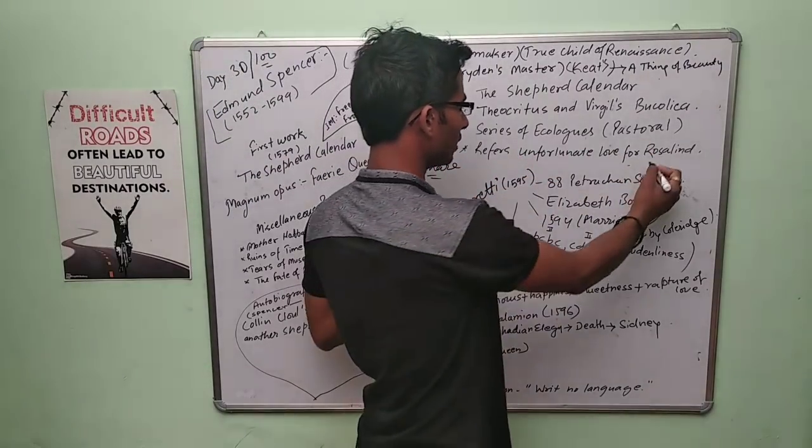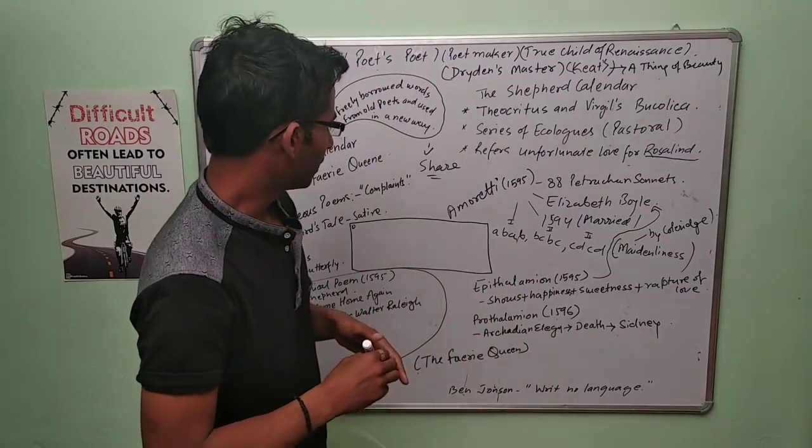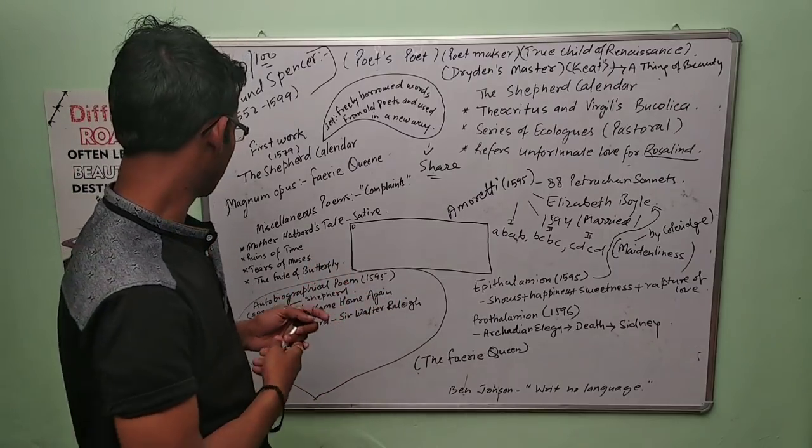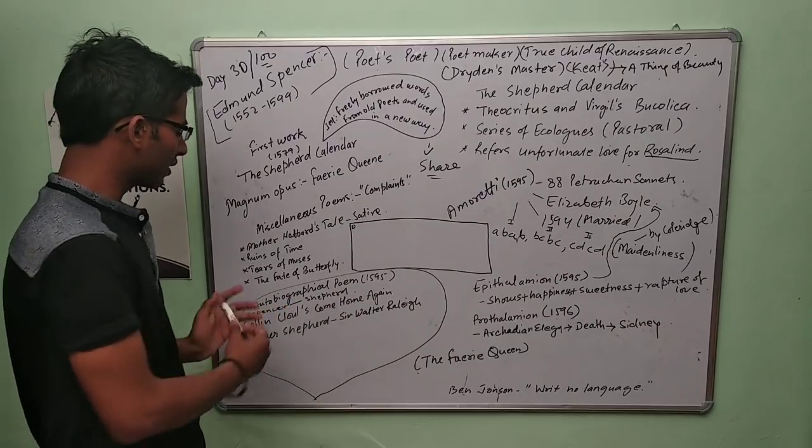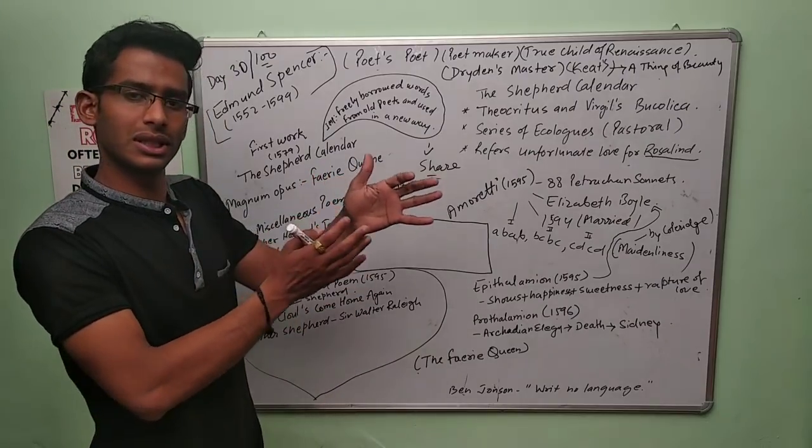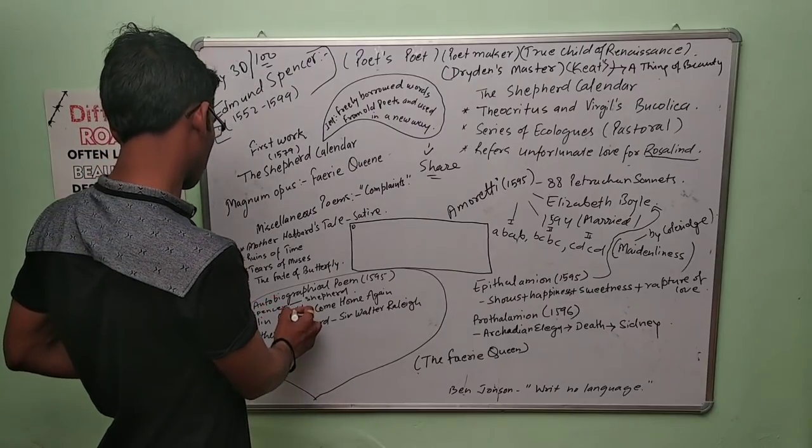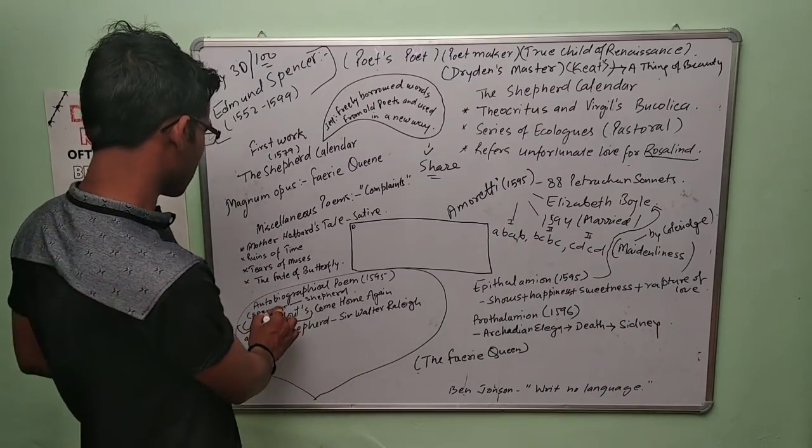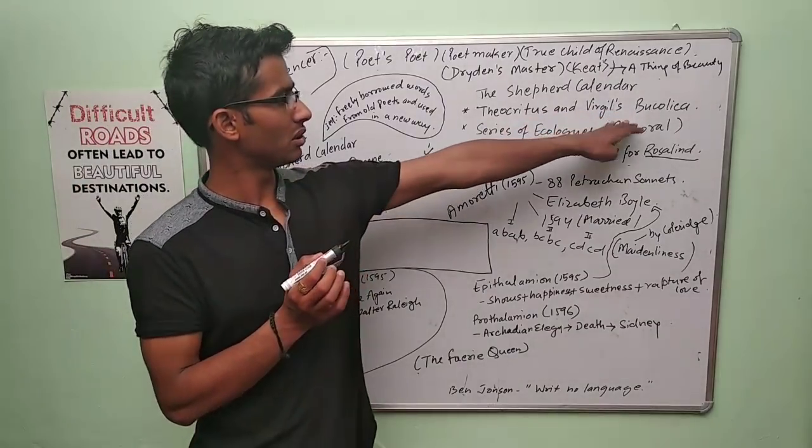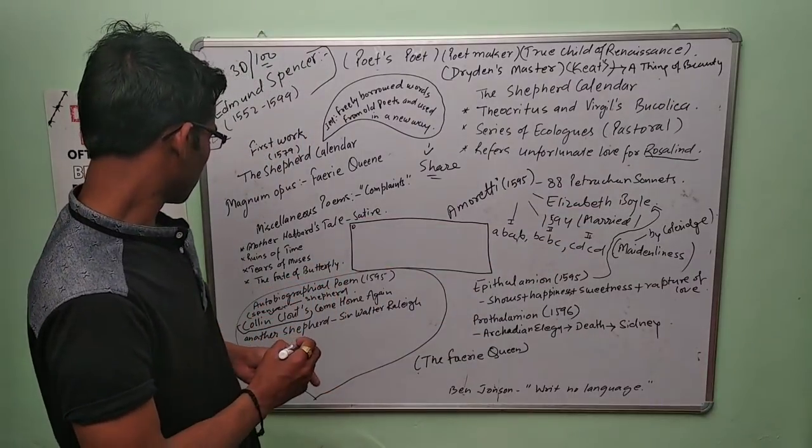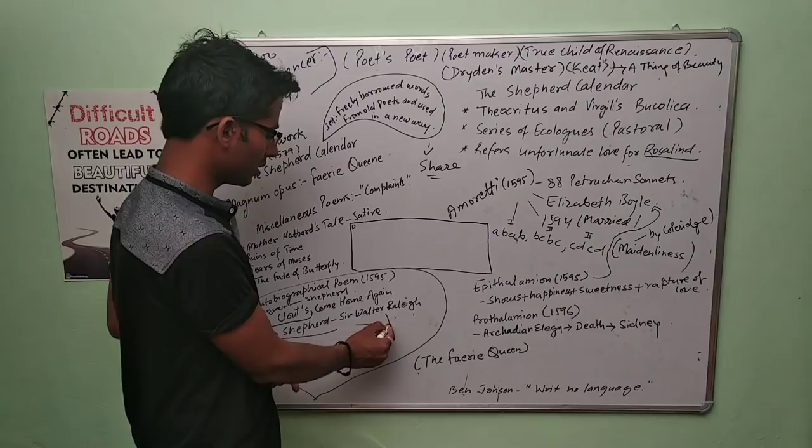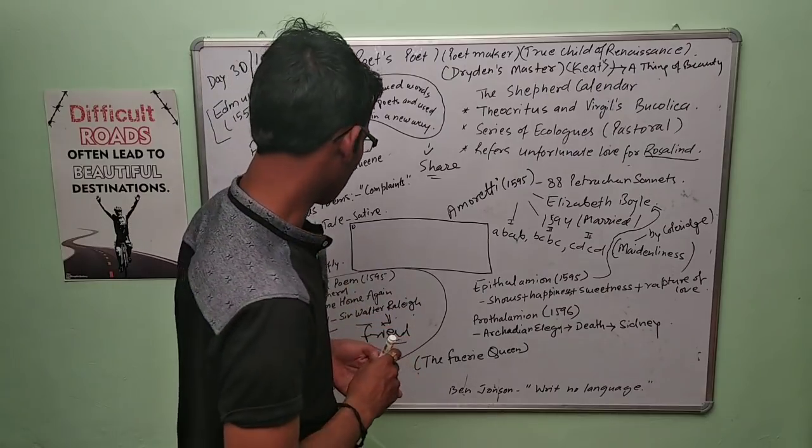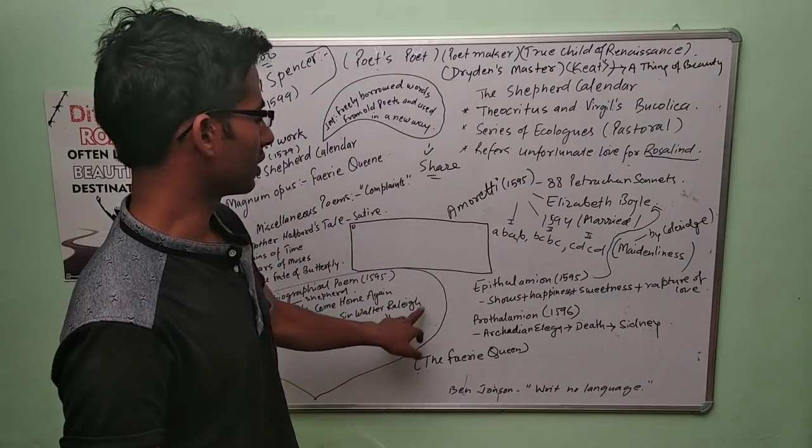Now let's talk about his autobiographical poem, which got published in 1595. The name of this autobiographical poem, which is asked even in UGC NET exam, is Colin Clouts Come Home Again. Colin Clout is Spenser, and this is a pastoral elegy. Another shepherd is Sir Walter Raleigh, who is Spenser's best friend. He is writing on the death of Sir Walter Raleigh.